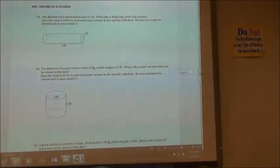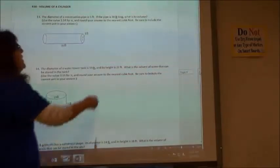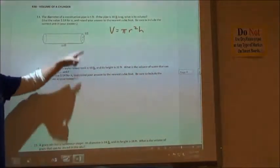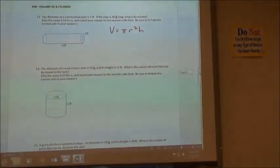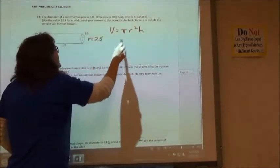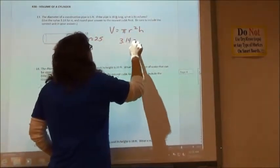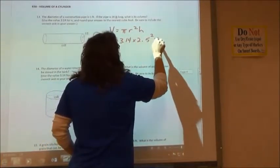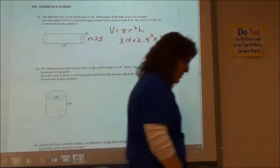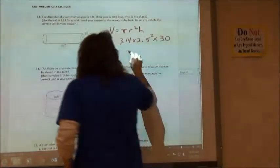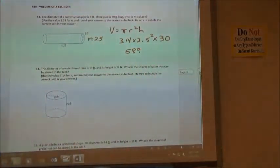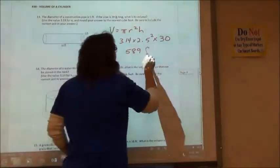So, same thing on this one. They gave us the diameter of 5 feet. Since our volume is pi r squared h, the radius of that would be 2.5. So, 3.14 times 2.5 squared times our height, which is going to be 30. You're faster than me. I didn't even type it in, but I'll believe you. 589 and my label, feet cubed.